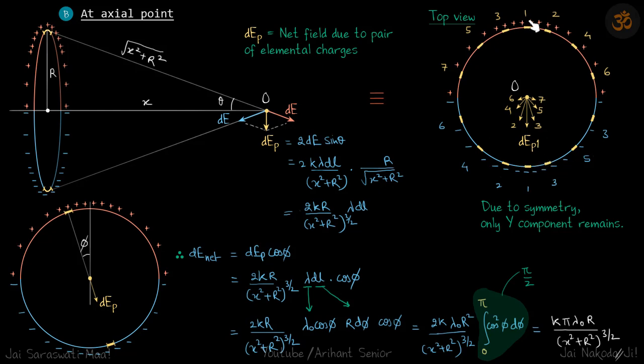Here the charge density is more, so DEP1 is more in length. As you go towards the pairs which are near the axis, the magnitude of the fields become less and less. But due to the symmetrical pairs, every elemental pair will have its symmetrical pair which will cancel out the horizontal components. So due to symmetry, only Y component remains.